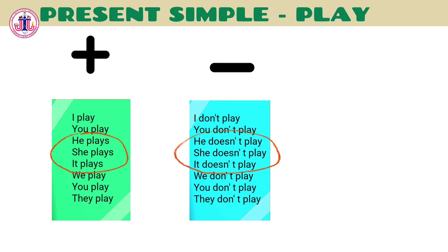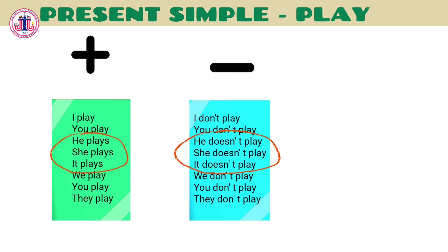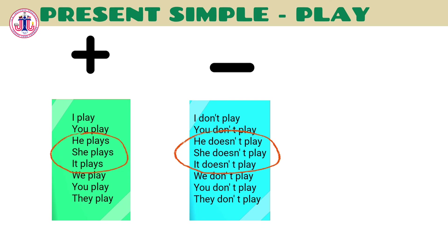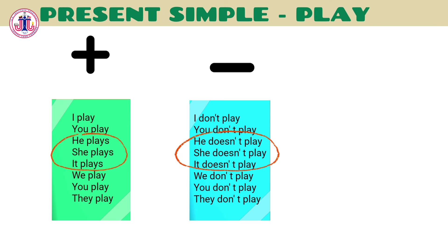If you notice, in the case of he, she, it — the third person — we use the auxiliary 'doesn't': she doesn't play.